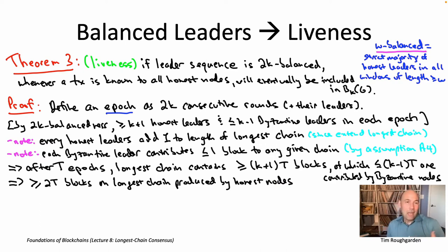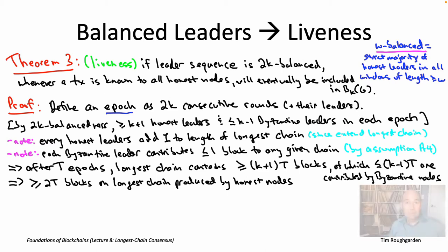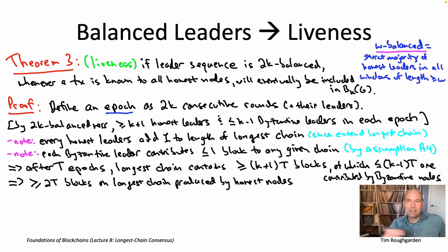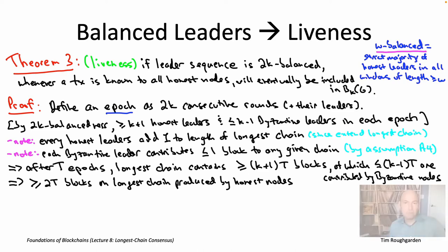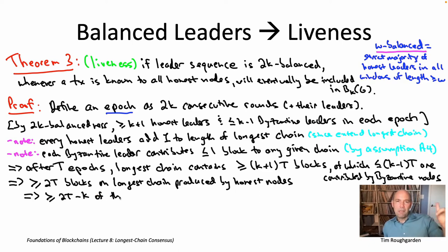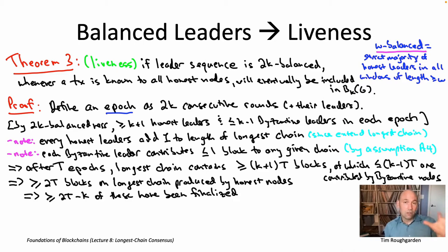In each epic, you're going to get at least two blocks contributed by honest nodes. So after T epics, you'll have at least 2T blocks produced by honest nodes appearing in the longest chain. As you take time to infinity — as T goes to infinity — the number of honest blocks on the longest chain also goes to infinity. So honest blocks are added to the longest chain infinitely often. Up to K of these honest blocks may be at the very end of the longest chain and not finalized yet, but the rest are going to be finalized — at least 2T−K finalized blocks.